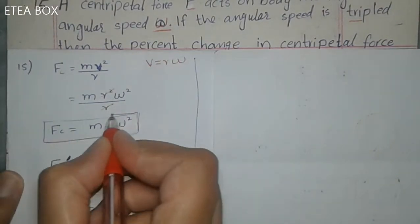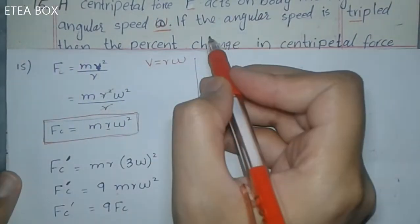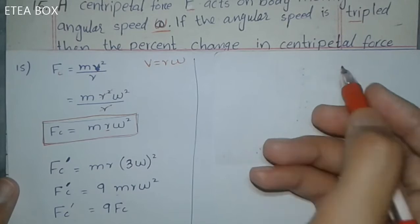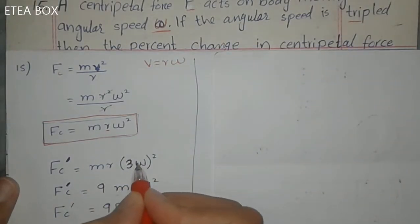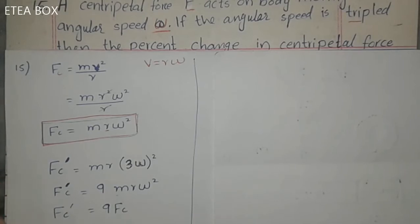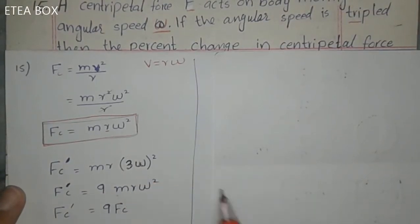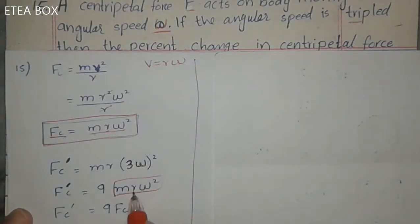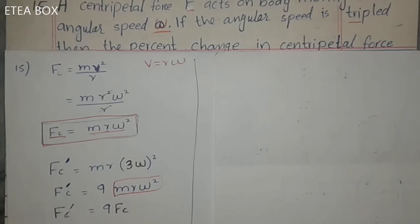If the angular speed is tripled, we put 3ω in place of ω. So (3ω)² gives 9, and the new centripetal force becomes 9mrω². Since mrω² equals the original centripetal force Fc, the new centripetal force is 9 times the original centripetal force.